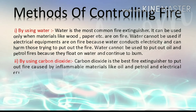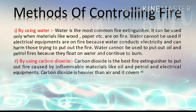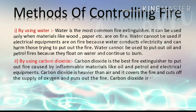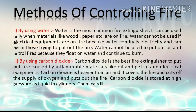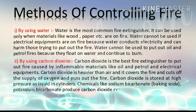Second, by using carbon dioxide — carbon dioxide is the best fire extinguisher to put out fires caused by inflammable materials like oil, petrol, and electrical equipment. Carbon dioxide is heavier than air; it covers the fire and cuts off the supply of oxygen, putting out the fire. Carbon dioxide is stored at high pressure as liquid in cylinders. Chemicals like sodium bicarbonate and potassium bicarbonate produce carbon dioxide near the fire.